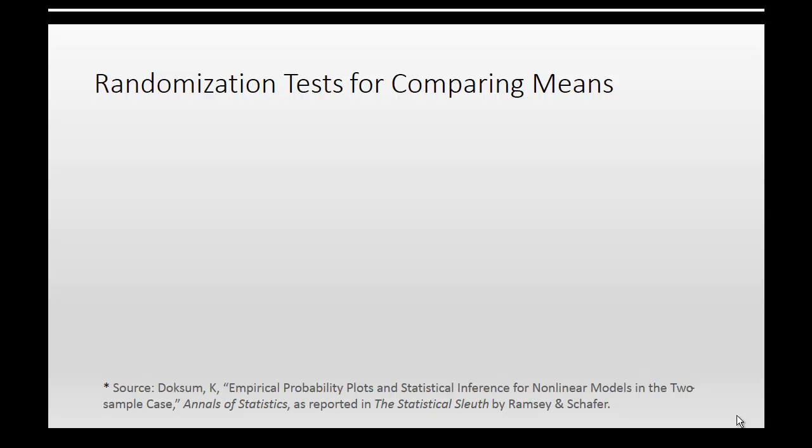Hi everybody. I'm going to show you how to do a randomization test for comparing two means. We'll use the StatKey software, and the idea is that in some kind of experimental situation where you're comparing a quantitative outcome for the individuals in two groups, we can determine whether or not there is a statistically significant difference in the means between the two groups.